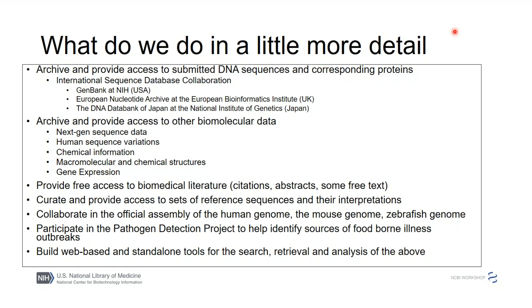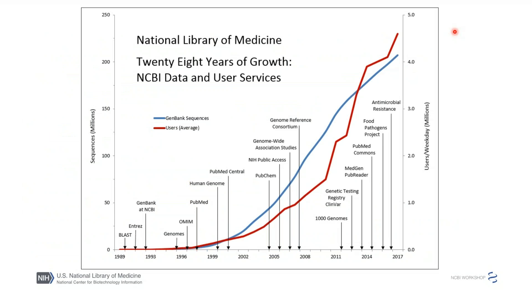We're also part of a pathogen detection project in the US, tracking sources of foodborne illness across public health and government agencies. And of course we build these web database tools we'll talk about today. This graph shows exponential growth of GenBank — the blue line — but that core database has become basically a pinpoint compared to the next-gen data.